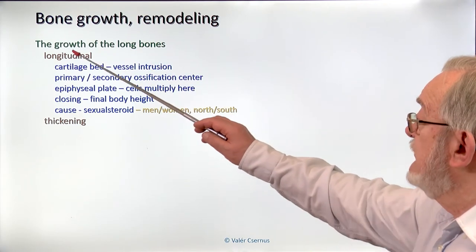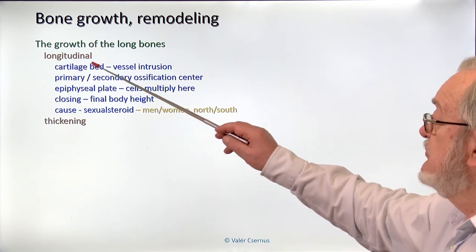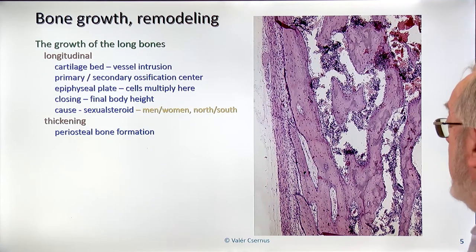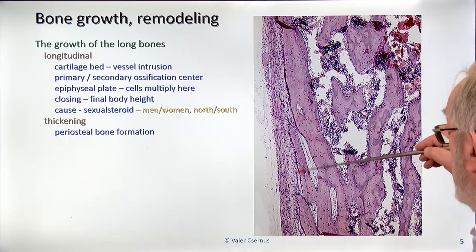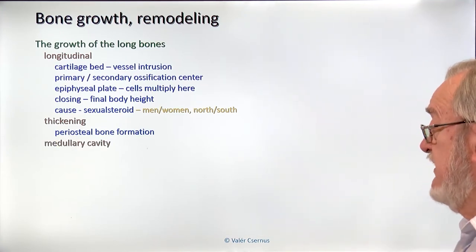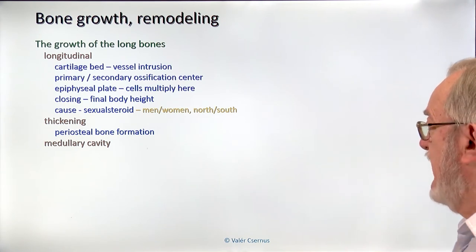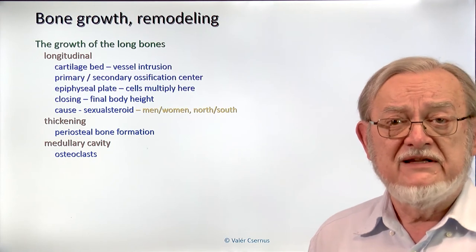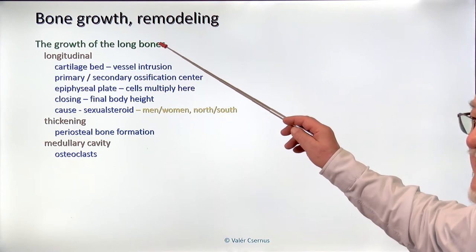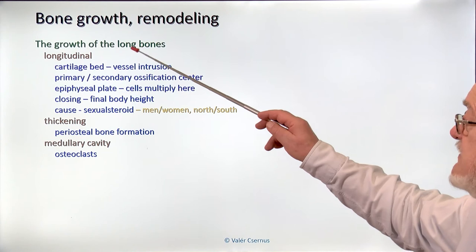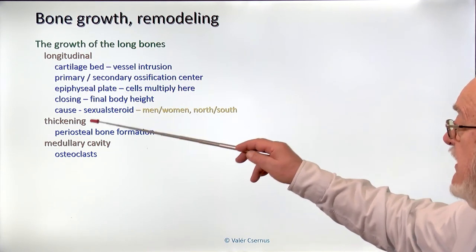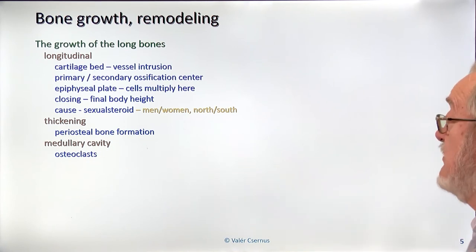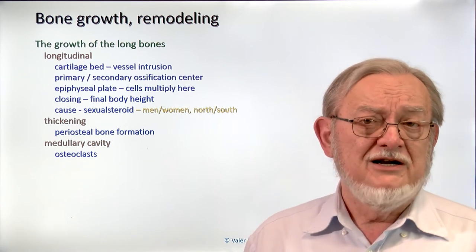So, the first factor of bone growth is longitudinal, ensured by the epiphyseal plate. The second one is thickening — the periosteal bone formation, which is a type of intramembranous bone formation, adds more and more layers and ensures the thickening. Third, the medullary cavity — the cavity inside the bone to make it more lightweight — is due to the osteoclasts. Osteoclasts chew up the inner side quicker than the outer side, and consequently the hole increases. Summarizing: longitudinal growth is ensured by the epiphyseal plate, thickening by periosteal bone formation, and the medullary cavity increase is due to the osteoclasts.